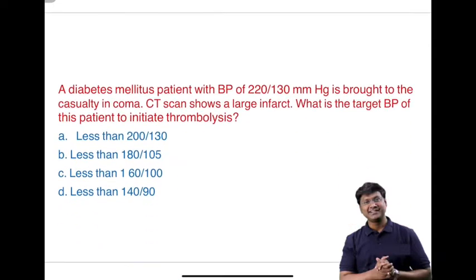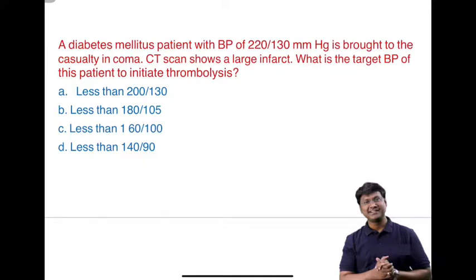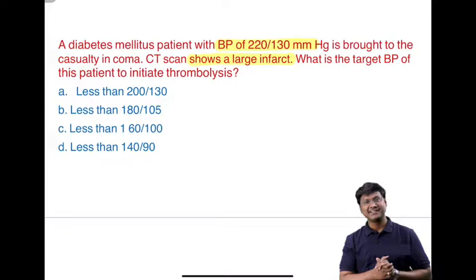The first important clinical scenario: a diabetic patient with blood pressure of 220/130 mmHg is brought to casualty in a state of coma. CT scan shows a large infarct. What is the target blood pressure to initiate thrombolysis — less than 200/130, less than 180/105, less than 160/100, or less than 140/90 mmHg?